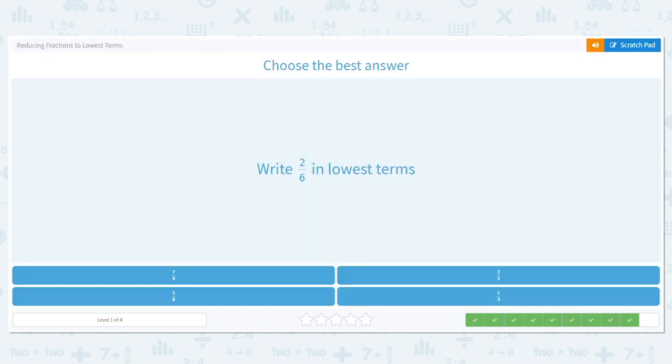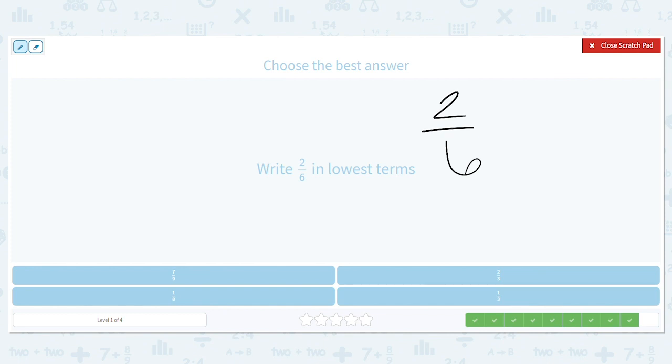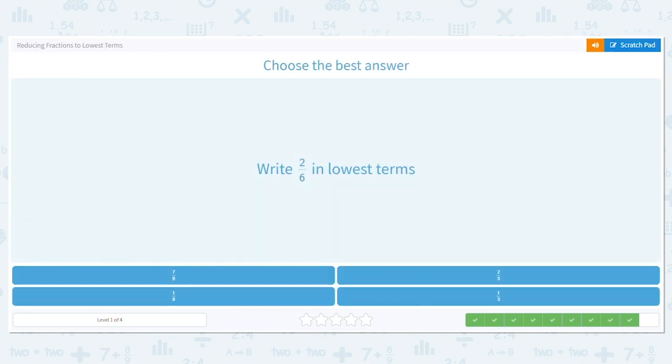Let's try one more. 2 sixths in lowest terms. Well, 2 only has two factors, 1 and 2. So we're going to use 2. 2 divided by 2 equals 1, and 6 divided by 2 equals 1. So 2 sixths in lowest terms is 1 third.